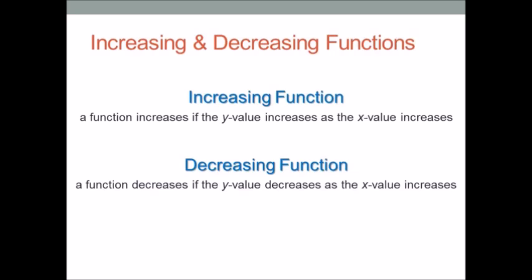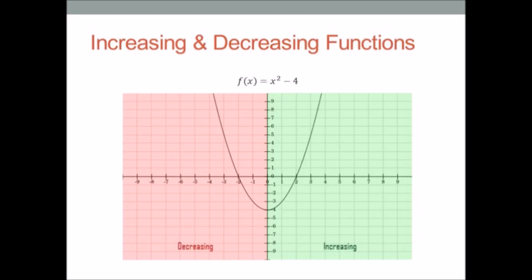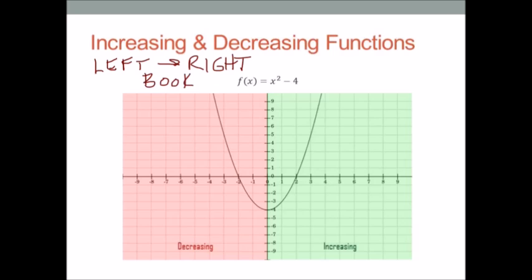This is easier to see on a graph, so let's go ahead and look at a graph. Here's a function, x squared minus 4. I've already gone ahead and shaded the decreasing and increasing parts. Increasing and decreasing functions always go from left to right — like you read in a book. So I'm always going to start over here on the left and move to the right.